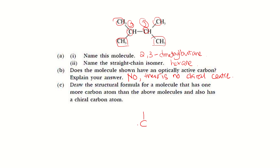The chiral center should attach to 4 different groups. I'll start with H, then CH3, then C2H5, and then C3H7 — all different groups. Counting the carbons: 1, 2, 3, 4, 5, 6, 7 — a total of 7 carbons. The carbon in the middle gets an asterisk because it is the chiral center, or chiral carbon atom. That's the answer for part C.